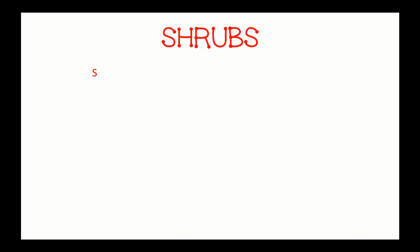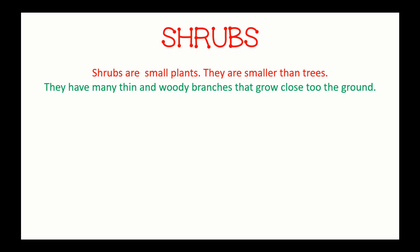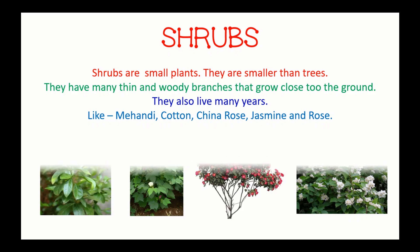Next, shrubs. Shrubs are small plants — they are smaller than trees. They have many thin and woody branches that grow close to the ground. They also live many years. Examples include mehendi, cotton, china rose, jasmine, and rose, as you can see through the images.